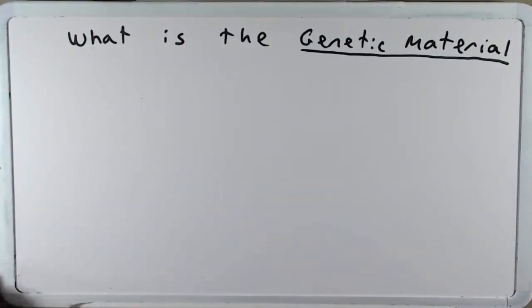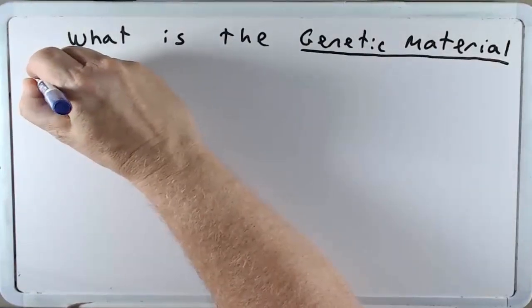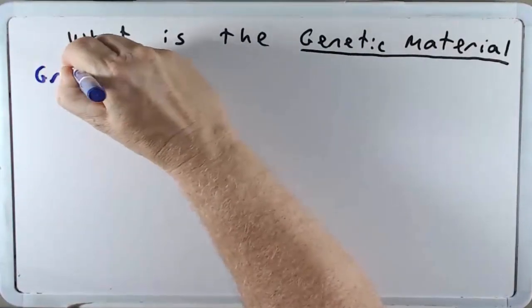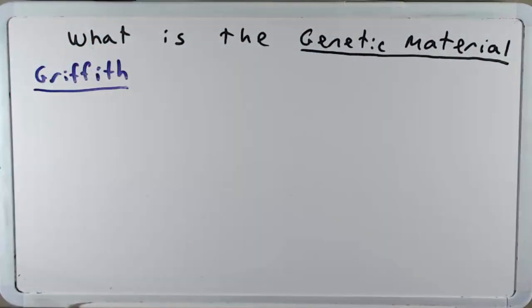There were many experiments that were done during this time that ultimately showed that DNA was the genetic material. But I'm only going to talk about two of them. And the first one is the experiments performed by Griffith. Frederick Griffith. This was one of the early experiments and it really set the stage for the next set of experiments I'll talk about.